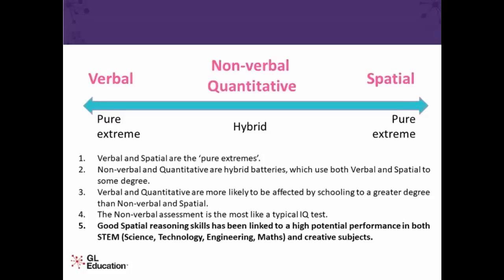The nonverbal assessment is most like a typical IQ test — that's the one to look out for if you want to identify students with special educational needs, as a particularly low nonverbal score can be useful in helping identify students that may need further screening. Good spatial reasoning has been linked to high potential performance in STEAM subjects — science, technology, engineering, mathematics — and creative subjects such as visual arts and design and technology.